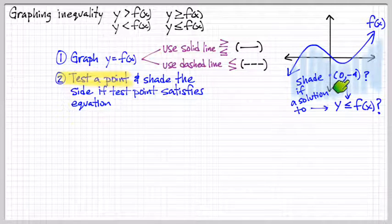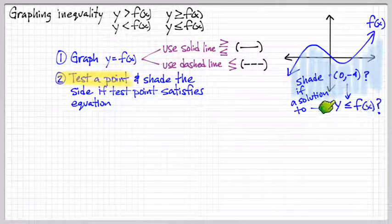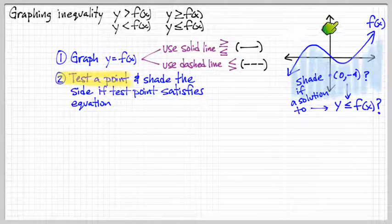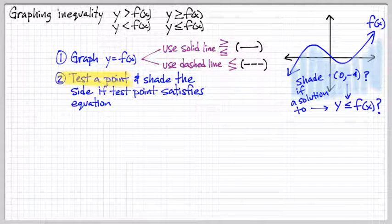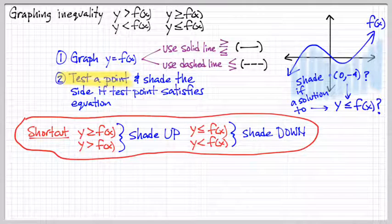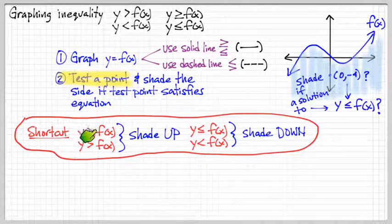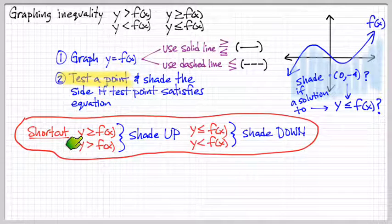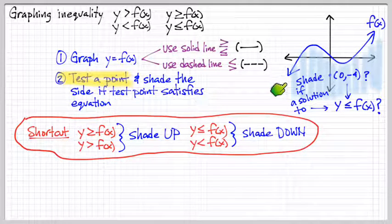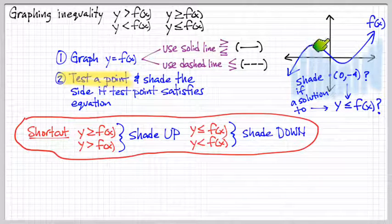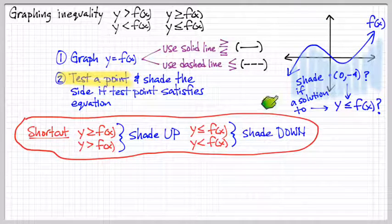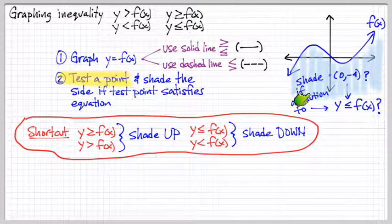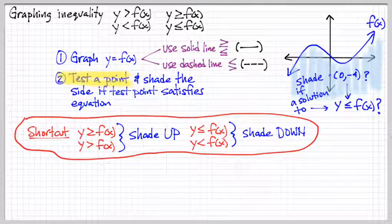If we found that 0, negative 4 did not satisfy this, then this would not be a solution, and instead we would shade everything on top. Now, a shortcut, and it's a legitimate shortcut, is just to remember this. If you have y is greater than f of x or greater than or equal, you take and shade everything above the f of x function. And if it's less than or equal or less than, you shade beneath the function. Okay, that's a shortcut.